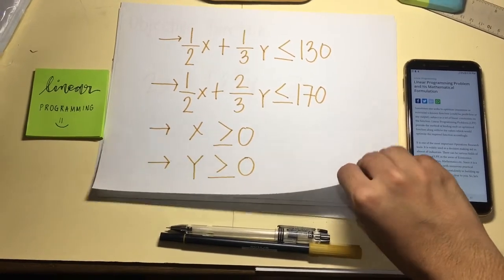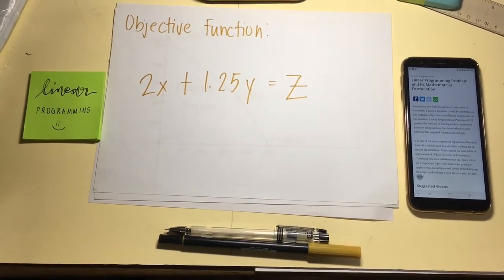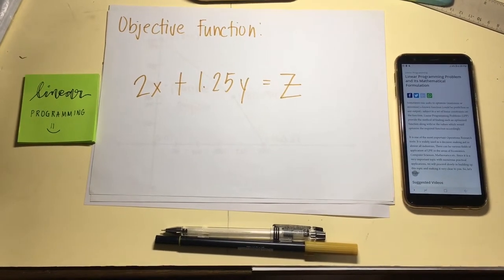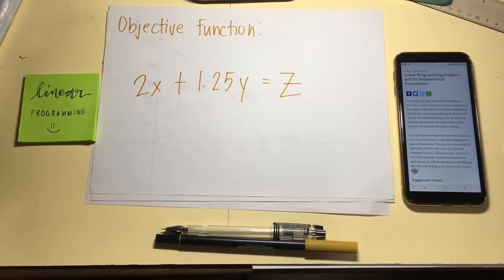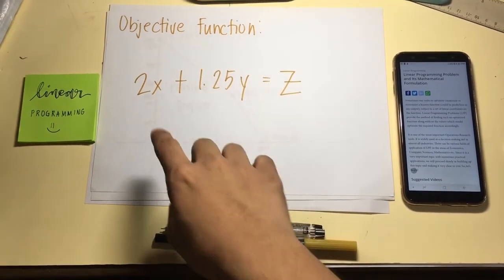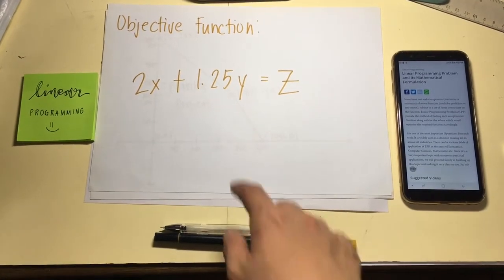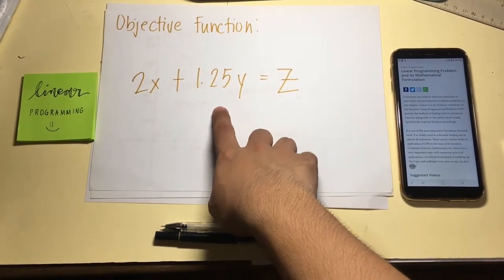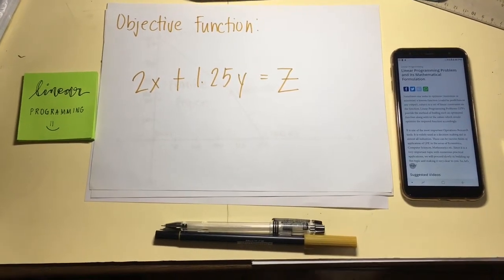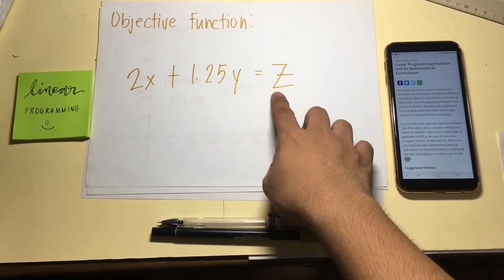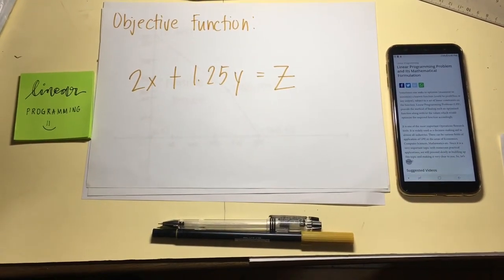Next step is to formulate an objective function. This function will help you to compute for the maximum profit that you can have. The 2X represents the cost of the first mixture which is $2 per pound while the 1.25Y represents the cost of the second mixture which is $1.25 per pound. While the Z represents the maximum profit that the candy manufacturer can have if he or she found the best mix of products to sell.